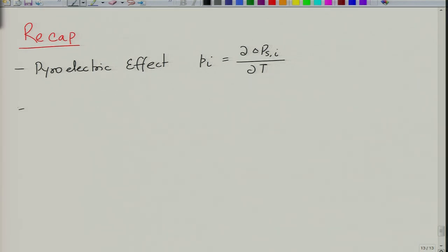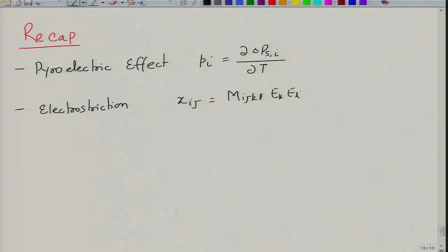We also looked at electrostriction, which is very similar to the piezoelectric effect and again correlates strain with respect to applied electric field: x_ij = m_ijkl * E_k * E_l. This is the change in dimension or strain generated as a function of applied electric field. The proportionality constant is the electrostriction coefficient, which is a fourth-rank tensor. Importantly, electrostriction is present in all materials irrespective of their symmetry — even a non-piezoelectric material will show this effect. That is the distinction between the two: piezoelectric effect occurs only in non-centrosymmetric materials, whereas electrostriction occurs in all materials.